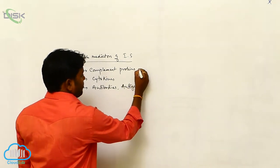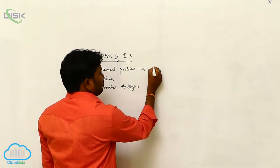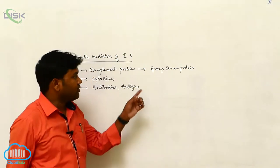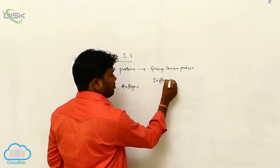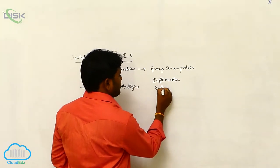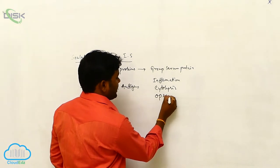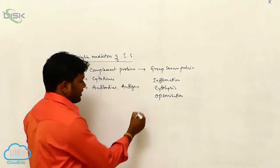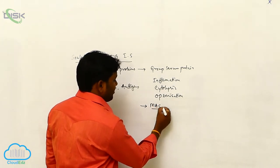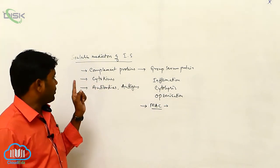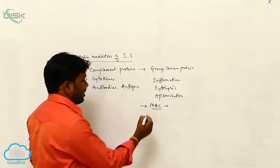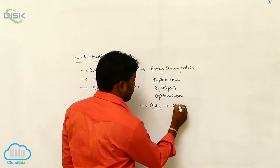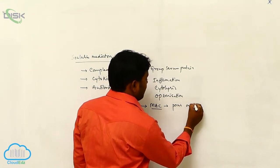Let's see the complement proteins. It is the group of serum proteins which is responsible for inflammation, cytolysis, and opsonization. When these complement proteins are activated, they form the membrane attacking complex, which is responsible for pores on the presence of a pathogen or antigen.